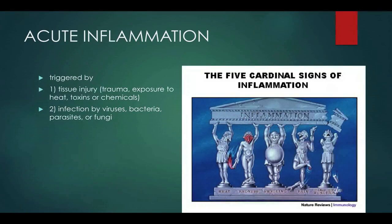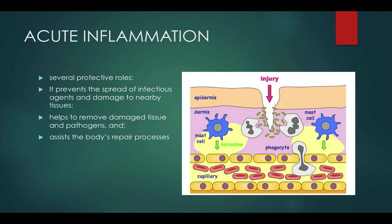Acute inflammation is triggered by tissue injuries — trauma, heat, burns, toxins, chemicals, or infections from various pathogens. There used to be four, but you can now call them five classic signs of acute inflammation: heat, redness, swelling, pain, and loss of function. The swelling, redness, and heat let mediators — cytokines, leukotrienes — get to where they need to do their job and help the healing process. Pain and loss of function stops you from overusing the injured area — like if you roll your ankle, you don't want to keep walking on it.